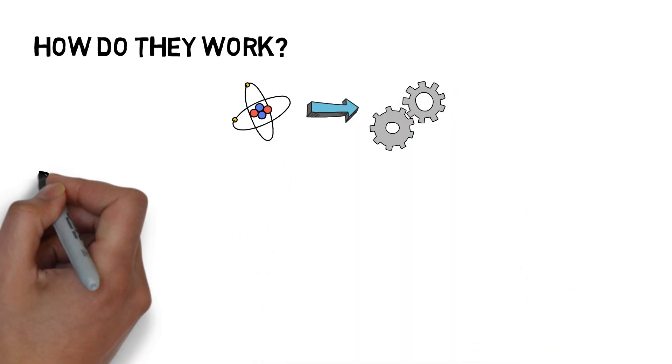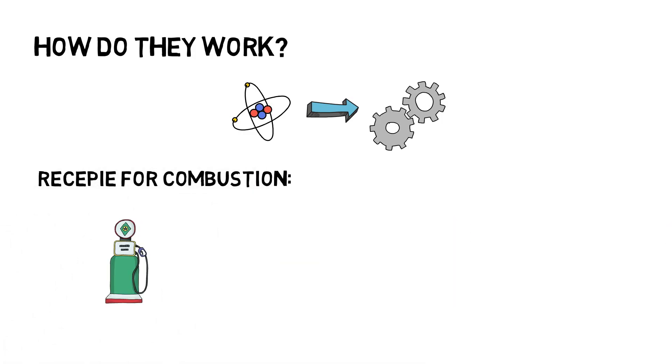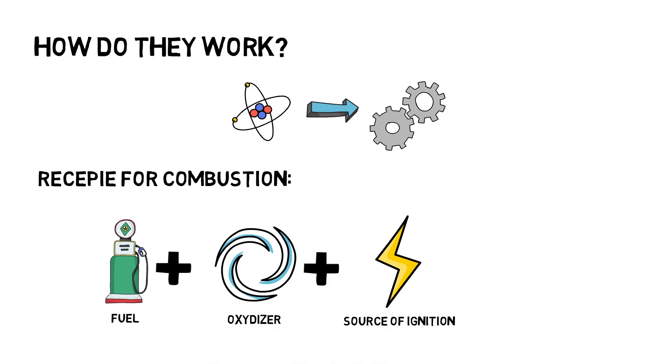The recipe for ignition requires three things: a fuel, an oxidizer, and a source of ignition. We typically get these from gasoline, oxygen in the air, and a spark plug.